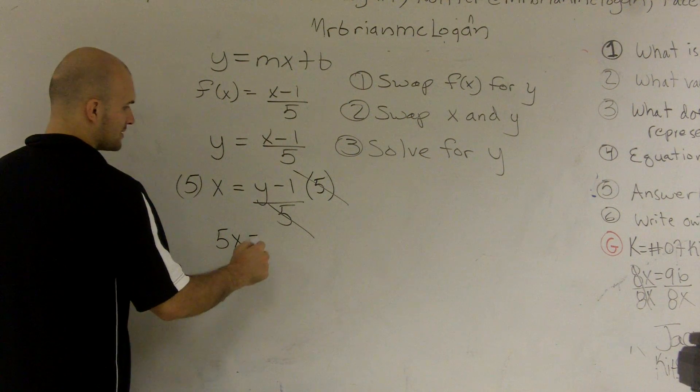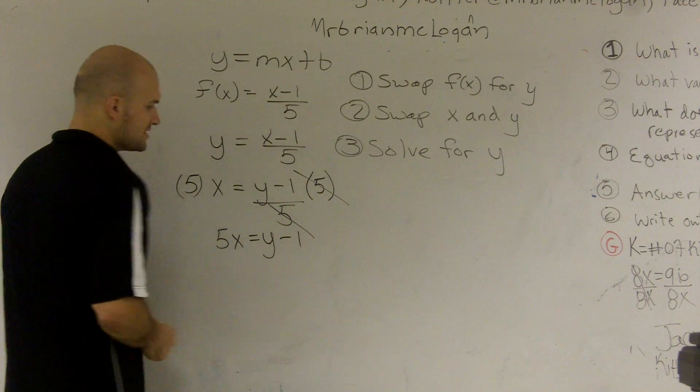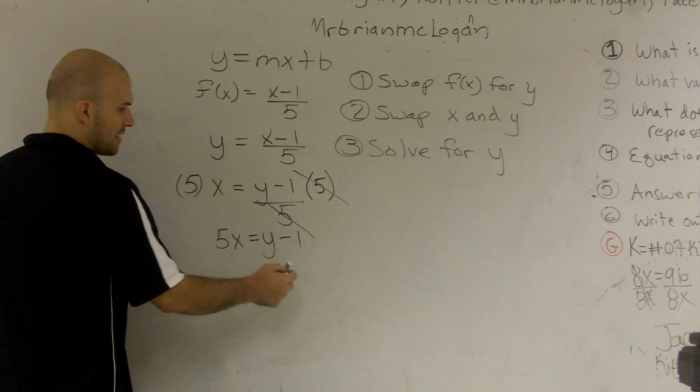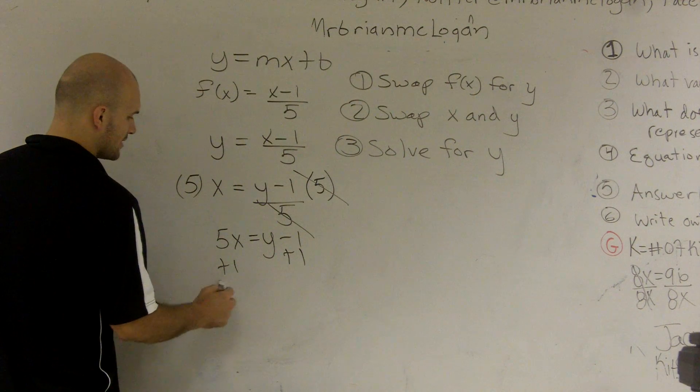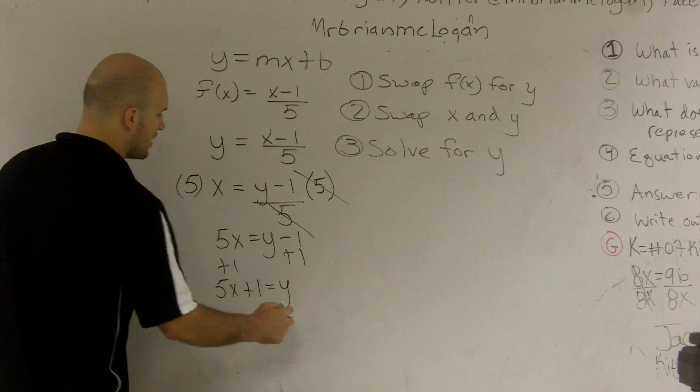So then I obtain 5x is equal to y minus 1. Now I'm going to get the y by itself. I add 1. So I get 5x plus 1 equals y.